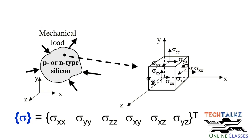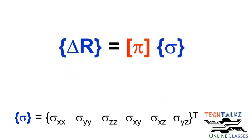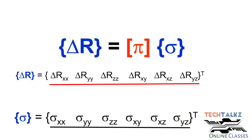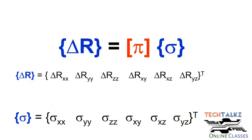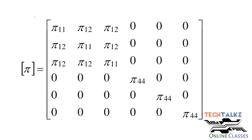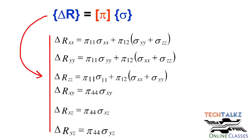We can express this with a relation: the change in resistance Delta R with respect to the stress tensor Sigma is given by the piezo resistive coefficient matrix Pi. The Pi vector has a specific form, and expanding the matrix gives us a full set of expressions.